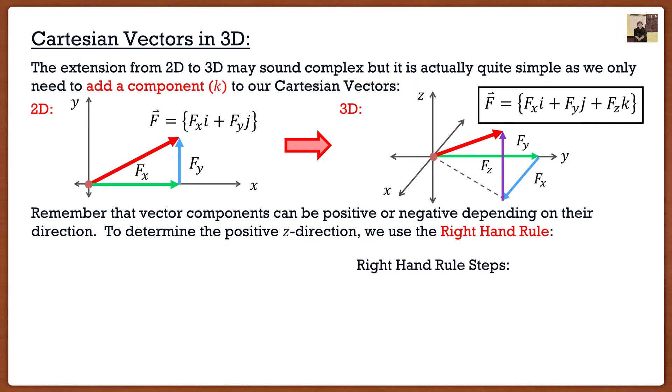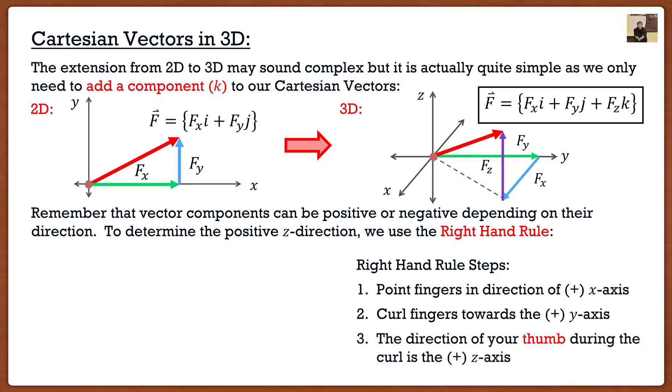So if I want to find the positive z-axis, or if I have the x and z-axis, I can find the positive y-axis. All I'm going to do is point my fingers in the direction of the positive x-axis. I'm going to then curl my fingers towards the positive y-axis. And whatever way my thumb is pointing is actually the direction of the positive z-axis.